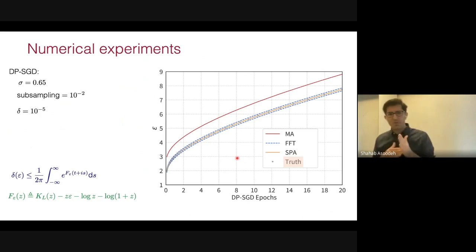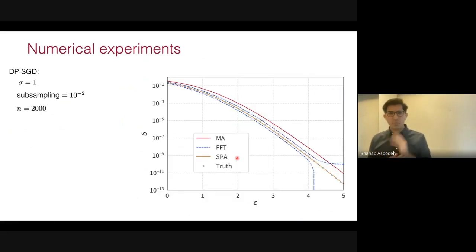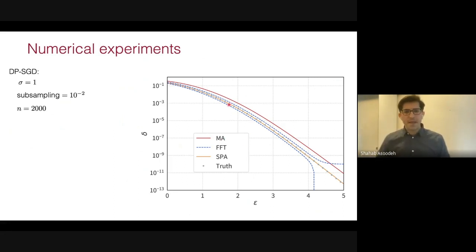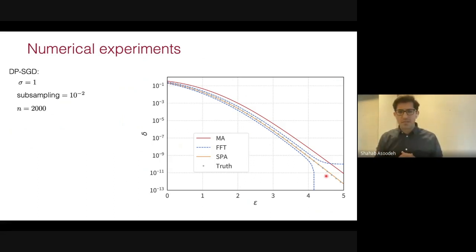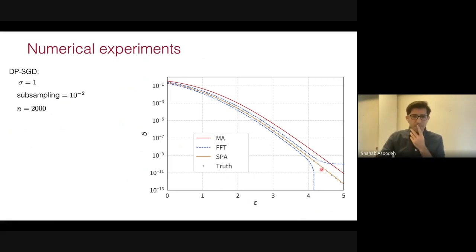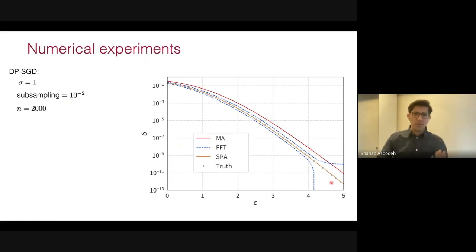For the delta-versus-epsilon plot with 2000 compositions, the moments accountant gives a crude bound, the blue dashed curves are FFT lower and upper bounds, and the yellow saddlepoint accountant curves (both indistinguishable) sit between them. Critically, where the Gopi et al. algorithm breaks at around delta = 10^{-9}, the saddlepoint accountant continues to work for any value of epsilon, demonstrating its numerical stability.